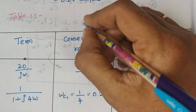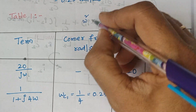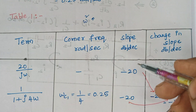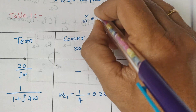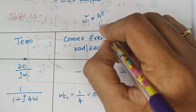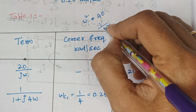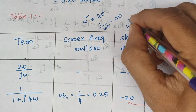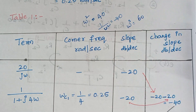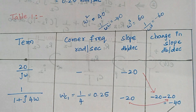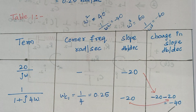What happens to omega squared? If we have omega squared in the numerator, since a single omega contributes 20 dB/decade, omega squared contributes 20 plus 20 — that is 40 decibels per decade. If omega squared lies in the denominator, it contributes minus 40. Similarly, omega cubed contributes 60 dB/decade, and 1 by omega cubed contributes minus 60 dB/decade.